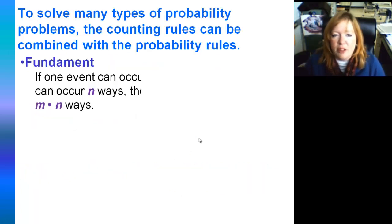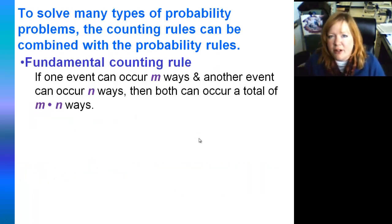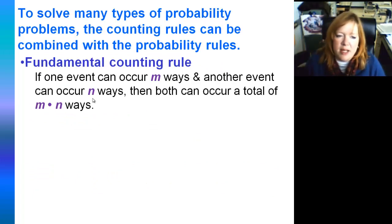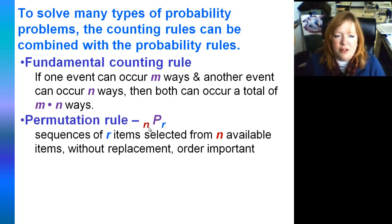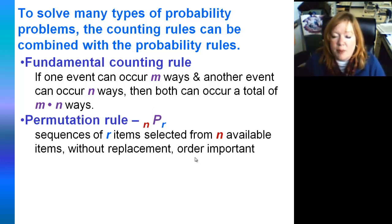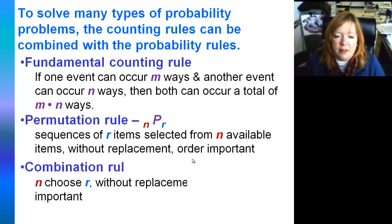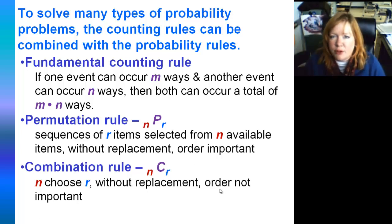You're going to be using the fundamental counting rule: if you have two different events and one event occurs M ways and another occurs N ways, you multiply them together. This can be strung out for many different events. Also going to be using the permutation rules — N pick R — remember that this is without replacement and order is important. Then the combination rule, N choose R, without replacement, order isn't so important. So ABC is the same as CBA.